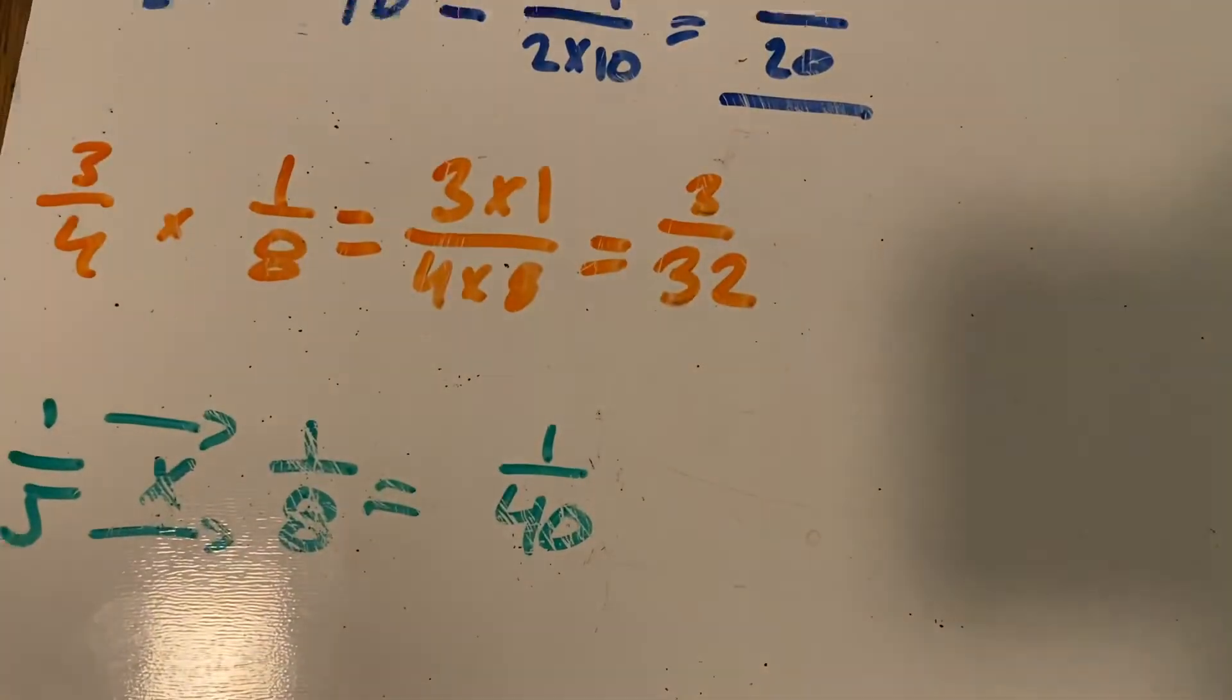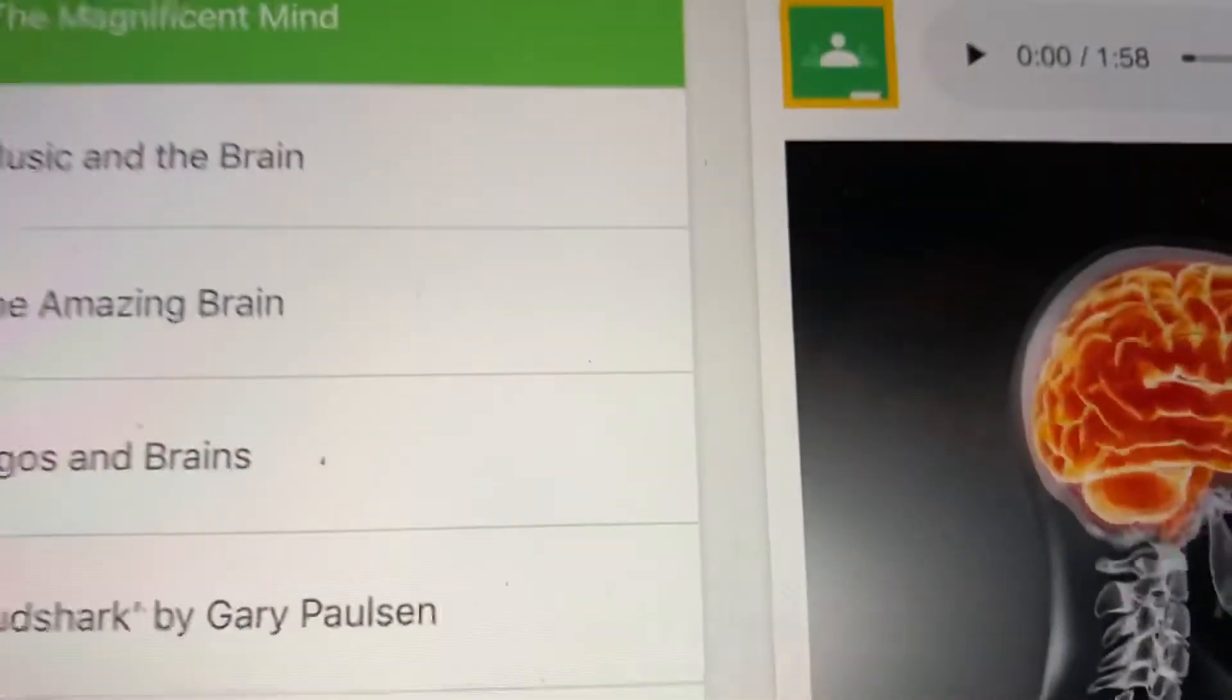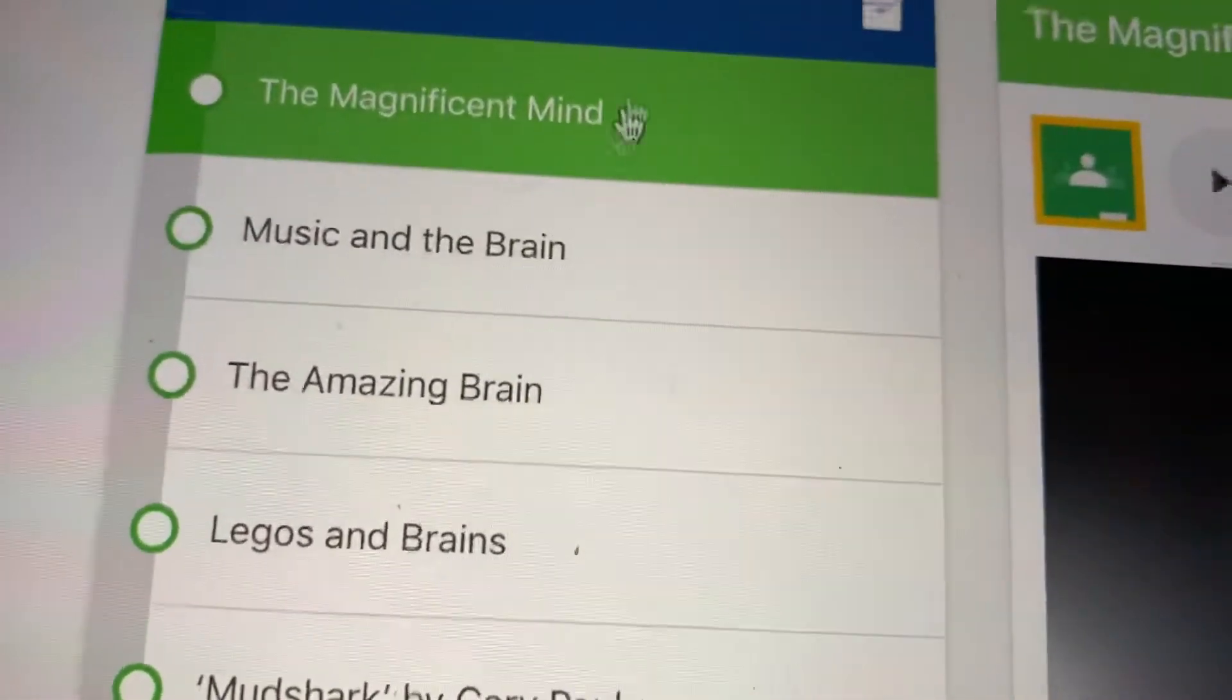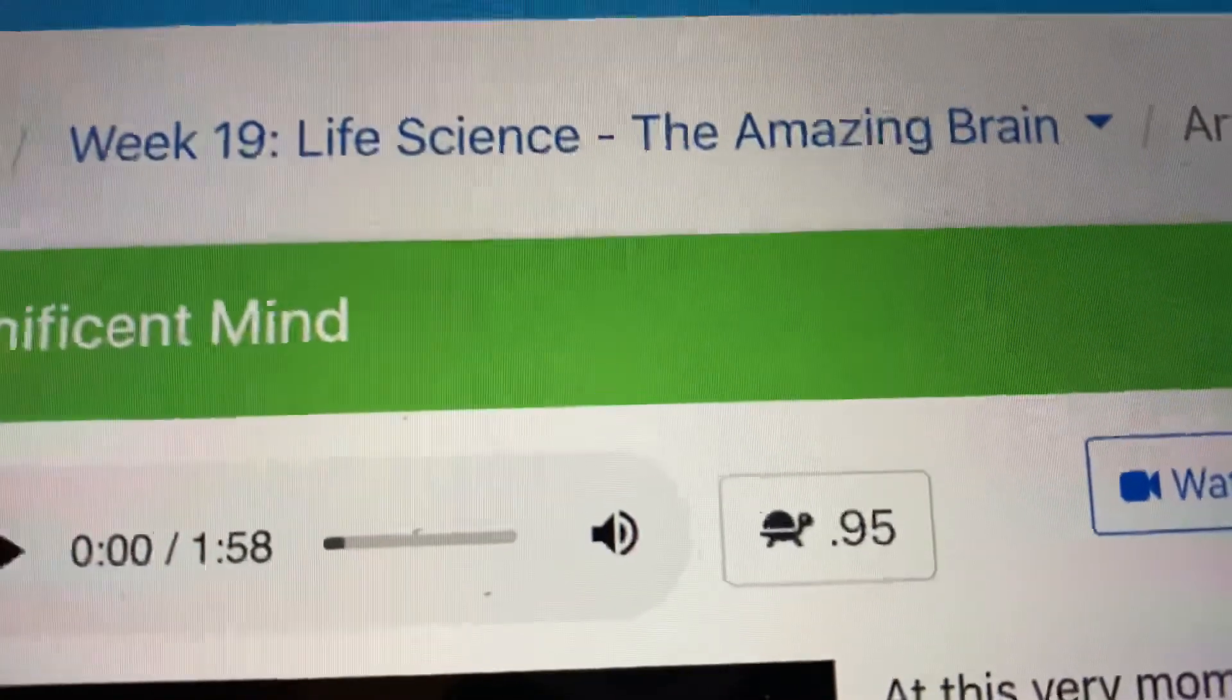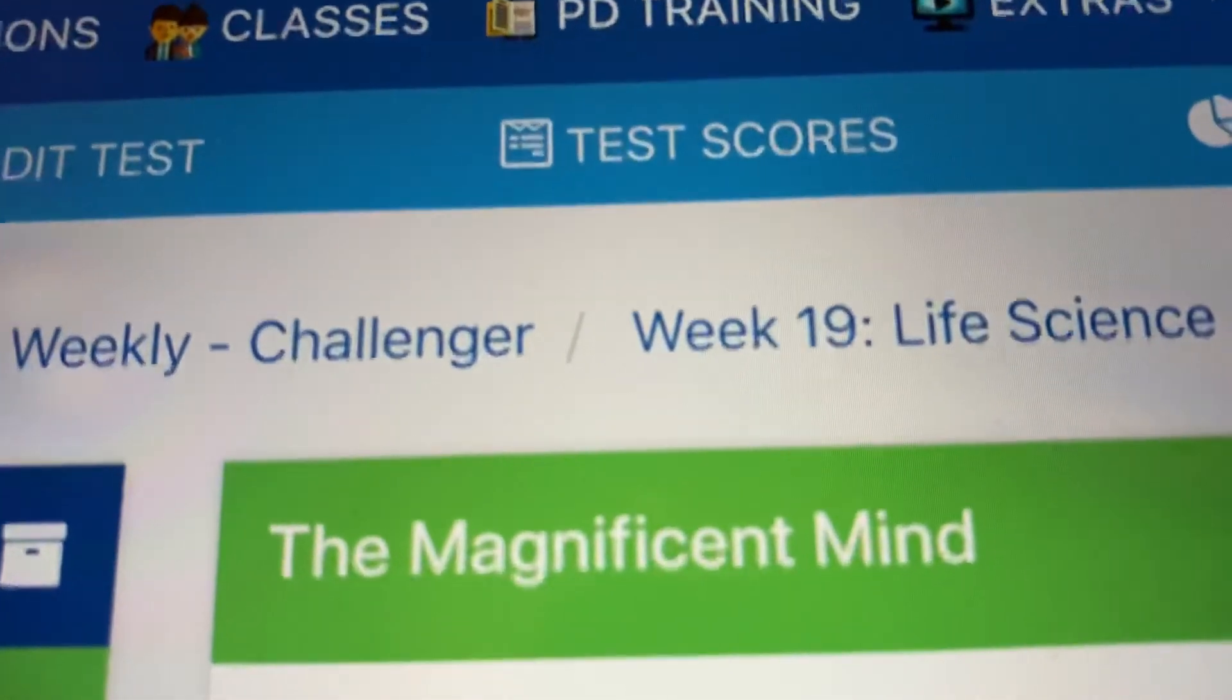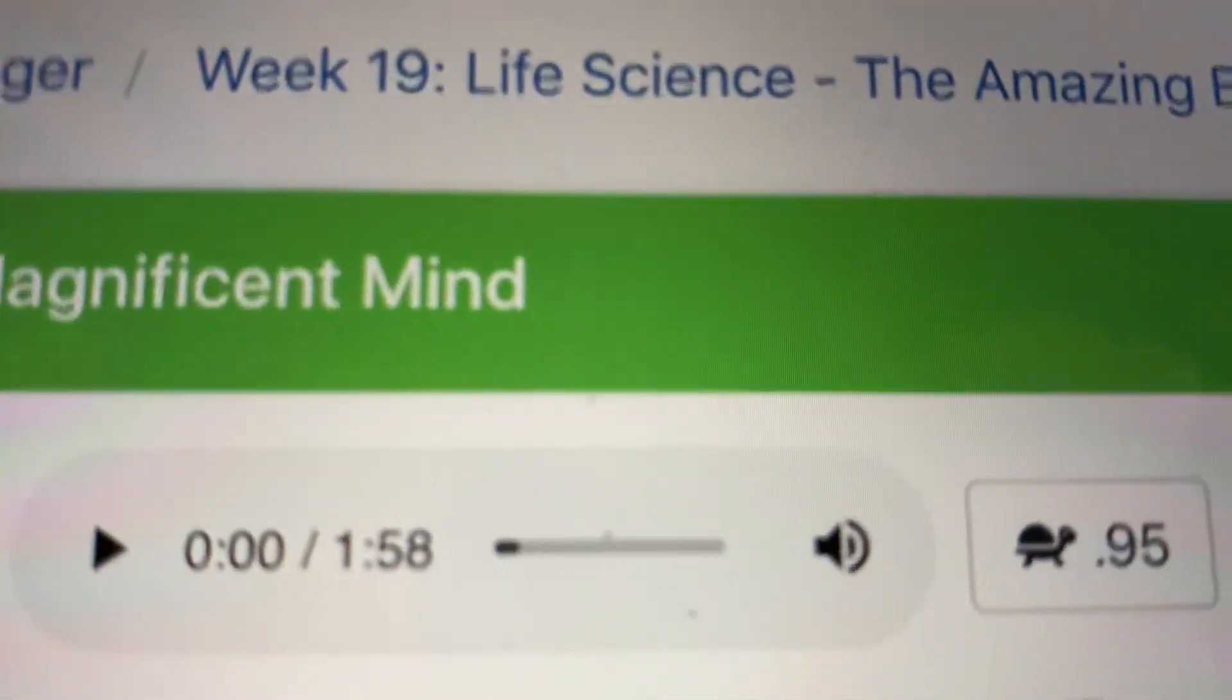But that's it for your math. For your science, you're going to be doing reading the first three, so one, two, three. You're going to read these three parts on your new one called week 19 Life Science: The Amazing Brain. I like this one a lot. Probably my favorite one of this life science unit. We're going to be talking about the brain, which I think is pretty cool. But you'll go ahead and read the first three and then that is it.